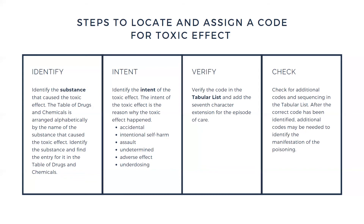Step three: verify the code in the tabular list and add the seventh character extension for the episode of care. After the intent of the toxic effect has been determined, the next step is correctly identifying a code from the Table of Drugs and Chemicals and adding the seventh character extension to identify the encounter.